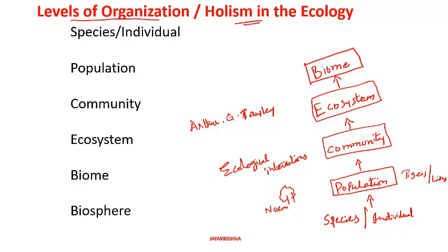Biome is nothing but a group of ecosystems. Though they are located at different parts of the world, because of the uniformity in the climatic conditions they form the same biome. The best example is tundra. The tundra type of climatic condition is formed both in the north pole and even in the south pole, though the geographical areas are two different areas.